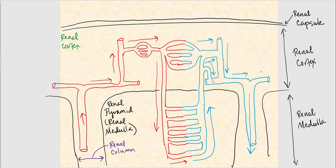The arcuate artery and arcuate vein are found at the junction between the renal cortex and the renal medulla, along the surface of the base of the renal pyramid. The vasa recta is found in the renal medulla. Please remember these locations, as they will come up when we discuss the physiology of the kidney.